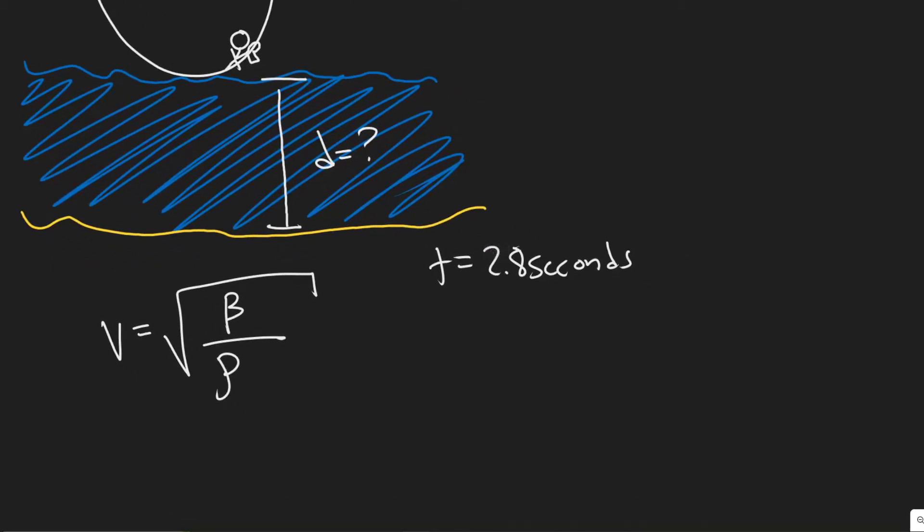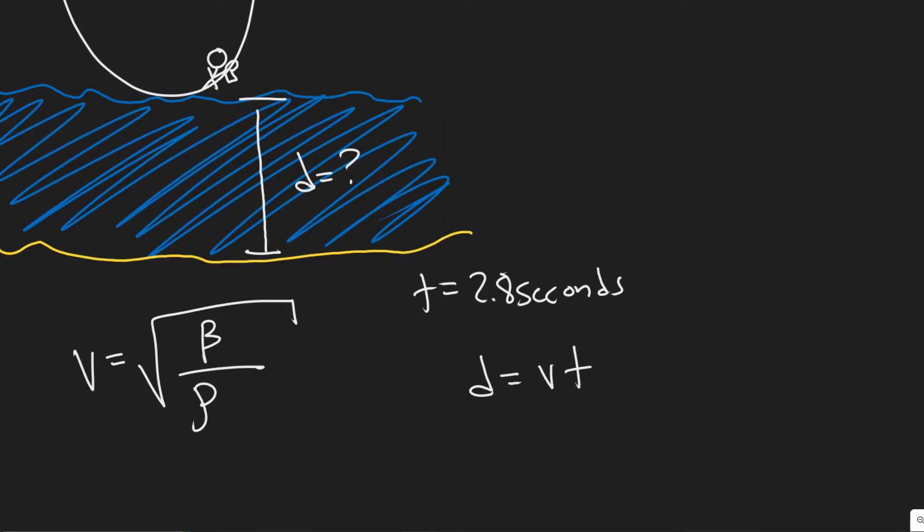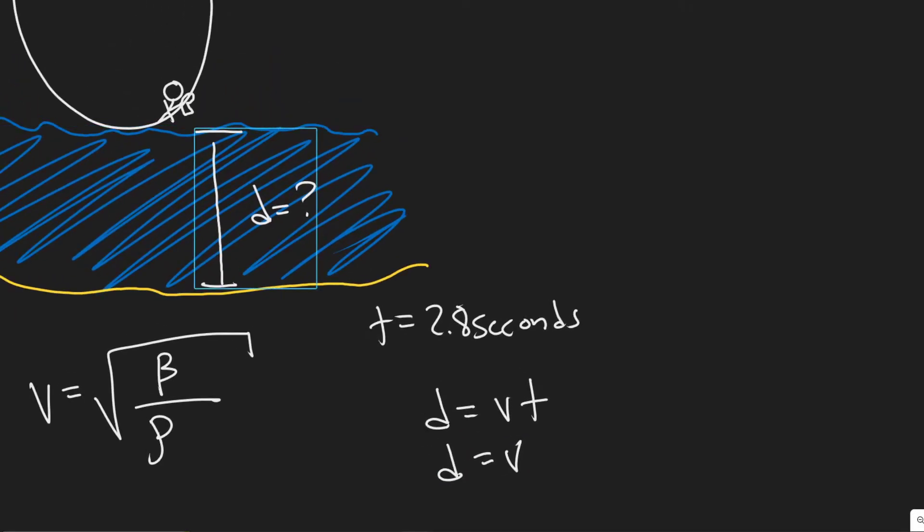How are we going to do this? We know that distance equals velocity times time. We're going to assume it travels at a constant velocity. So we know the distance d, we know the velocity it is going to travel, and we know how long it travels for. That's going to give us the distance of how deep it is.